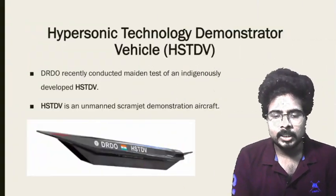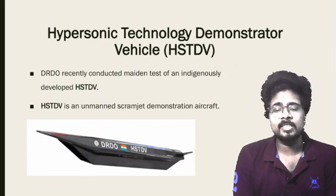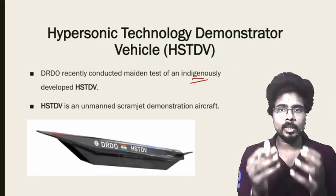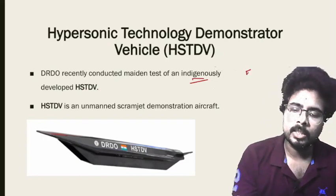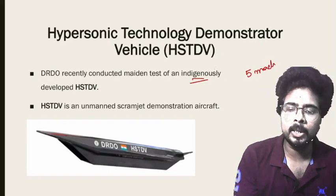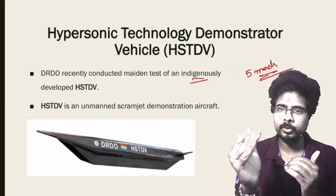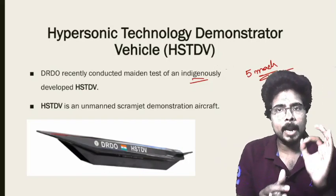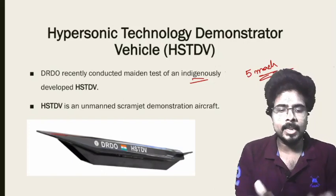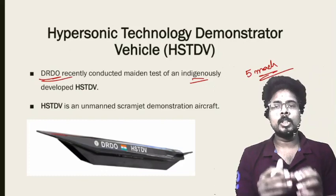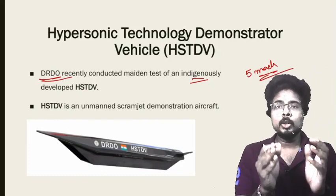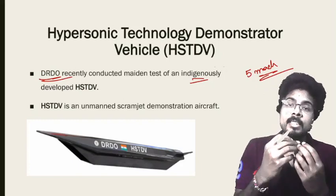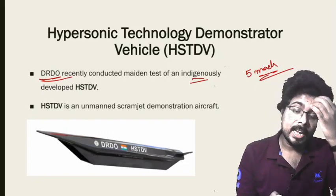Next news: the Hypersonic Technology Demonstrator Vehicle, HSTDV. This HSTDV is a Hypersonic Technology Demonstrator Vehicle. What is hypersonic? Hypersonic refers to the greatest speeds — speeds at Mach 5, that is 5 times the speed of sound. Anything above the speed of sound is supersonic; if the speed is 5 times the speed of sound, it is called hypersonic. DRDO has conducted the hypersonic test. It is a Technology Demonstrating Vehicle — DRDO is just checking the technology. It is an unmanned scramjet demonstration vehicle. We also have scramjet and ramjet engines, which will be discussed separately.